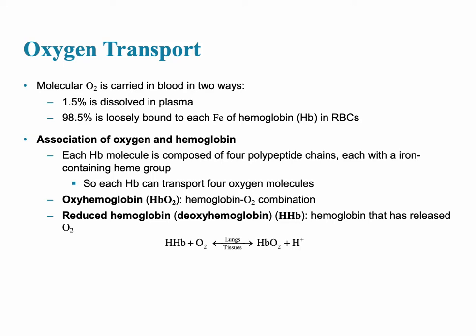Oxygen transport occurs in two ways in the blood. The primary way is bound to the hemoglobin in the red blood cells — 98.5% of it is loosely bound to specifically the iron of the hemoglobin. The rest is dissolved in the plasma. Oxygen diffuses from the alveolus into the pulmonary capillary, then combines with hemoglobin, and at that point it is referred to as oxyhemoglobin.